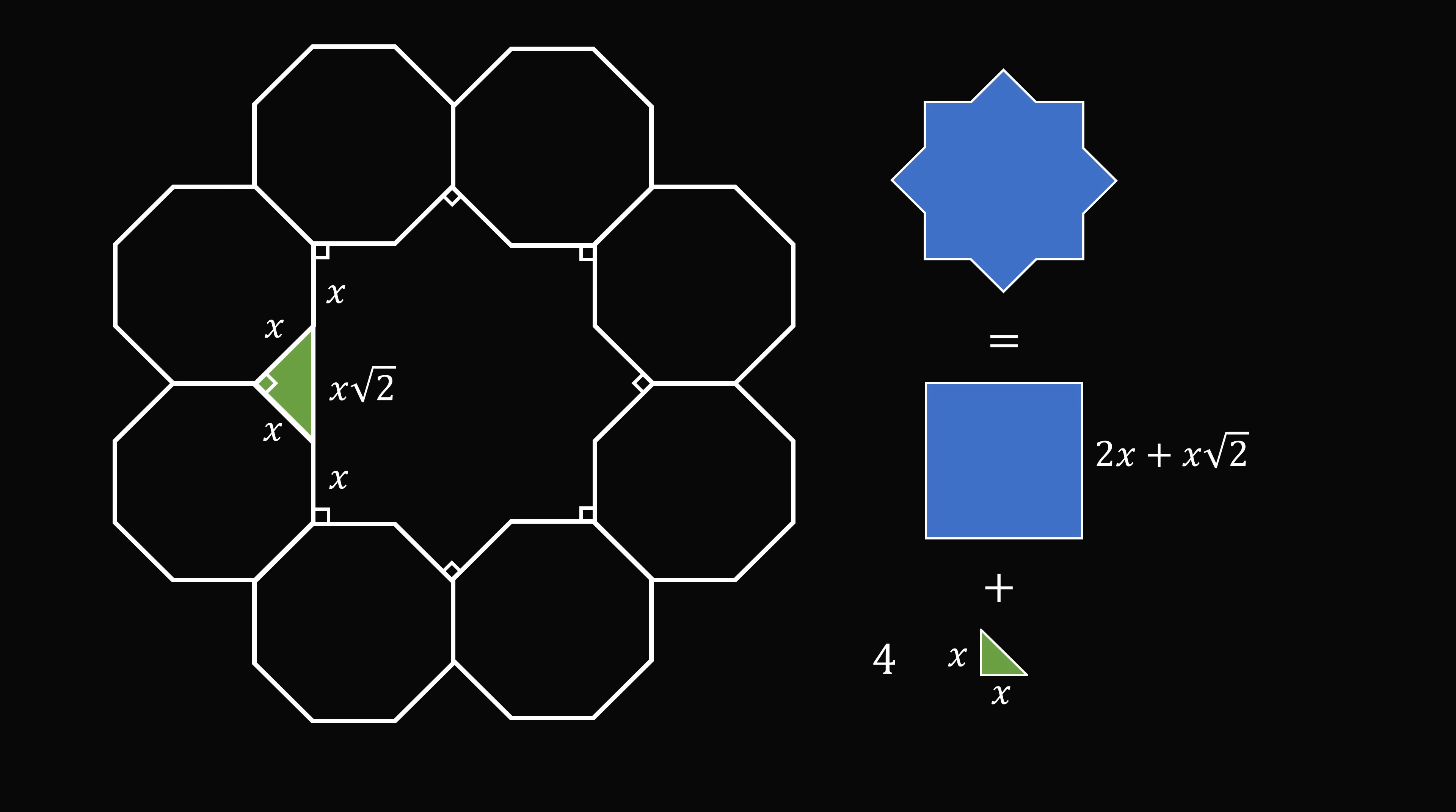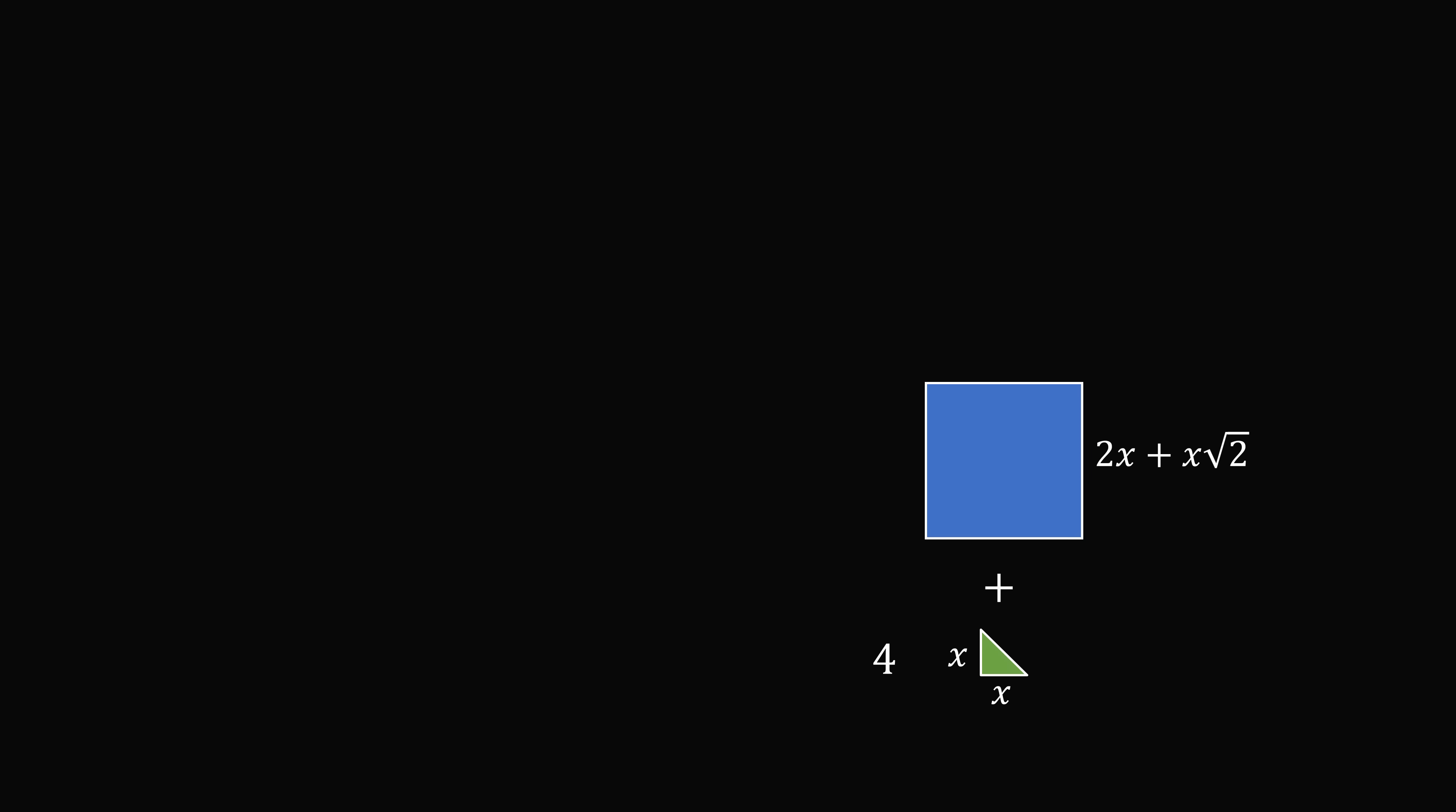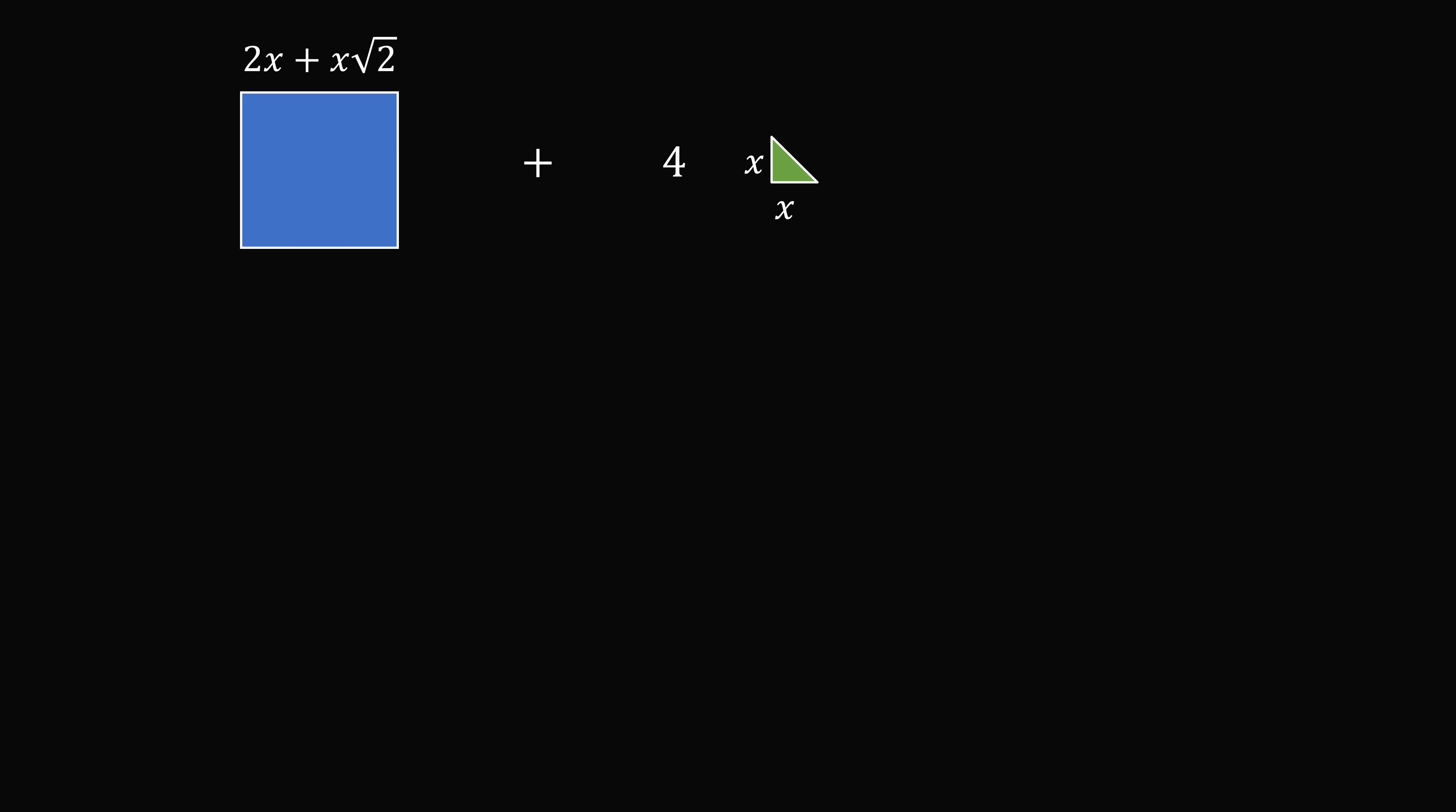And each right triangle has side length equal to x. So we'll just focus on the areas of these two shapes. The area of the square is equal to the square of its side length, so that's the square of 2x plus x root 2.